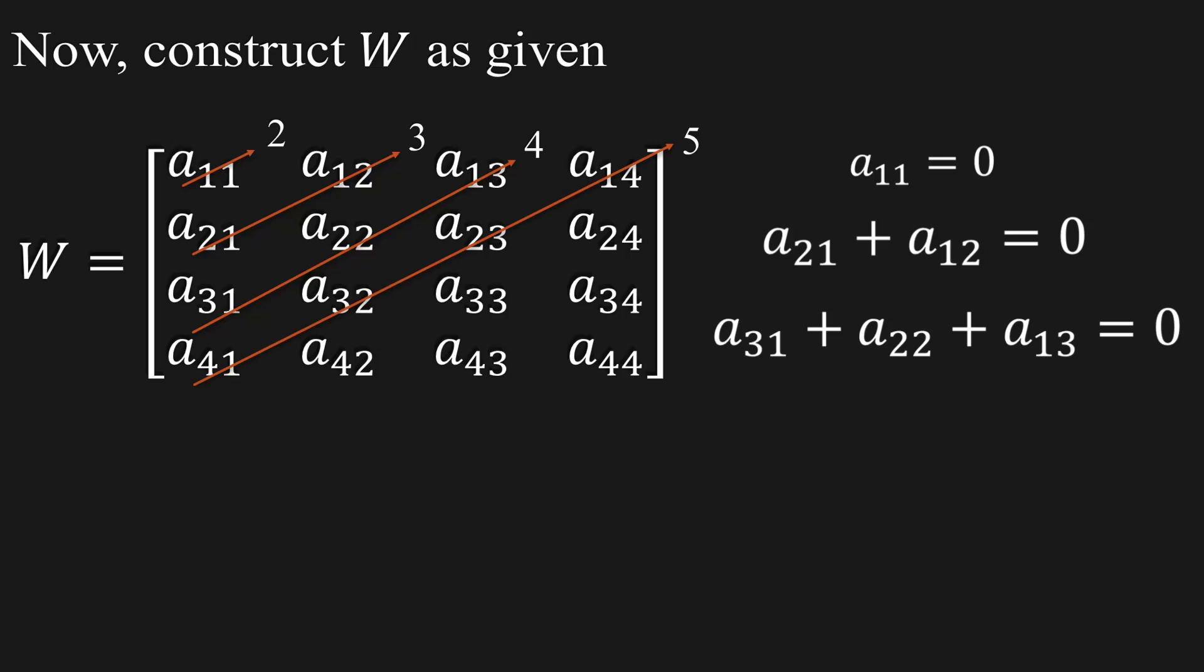The sum of indices along the arrow is 5. According to the given condition, we have a41 + a32 + a23 + a14 = 0. The sum of indices along the arrow is 6. According to the given condition, we have a42 + a33 + a24 = 0.